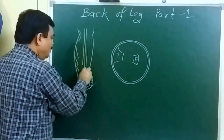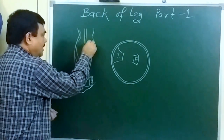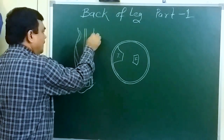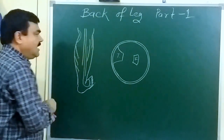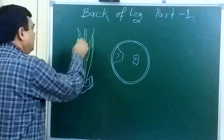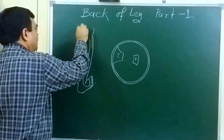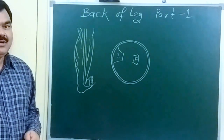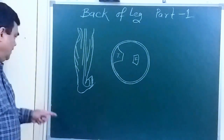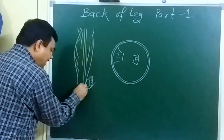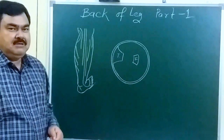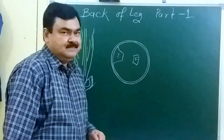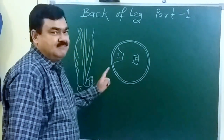Here is the posterior cutaneous nerve of thigh, and here are numerous branches from the sural nerve. Here is the sural nerve, here is the sural communicating nerve, and here is the lateral cutaneous nerve of calf. This is the posterior division of medial cutaneous nerve of thigh, and here is the medial calcaneal nerve, which is a branch of the tibial nerve. So these structures are present in the superficial fascia of the back of leg.